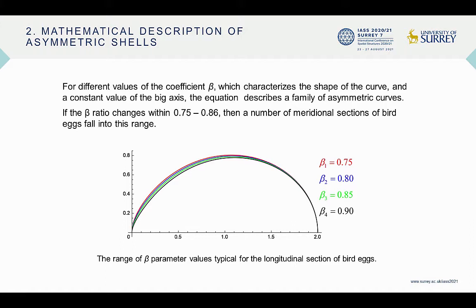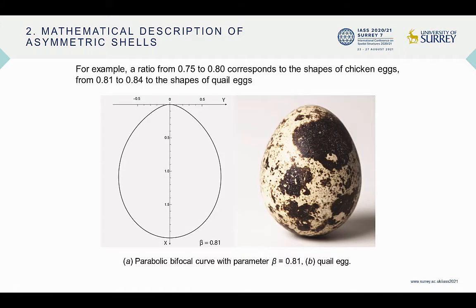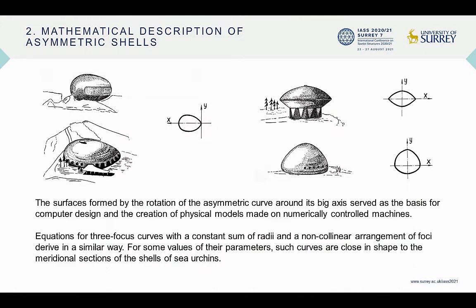If the beta ratio changes from 0.75 to 0.86, then a number of meridional sections of bird eggs fall into this range. A ratio from 0.75 to 0.80 corresponds to the shapes of chicken eggs.